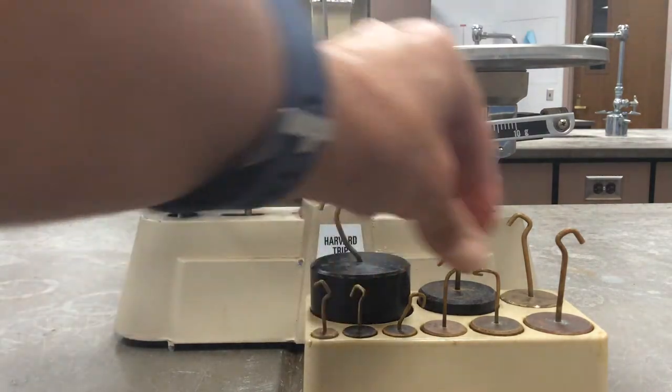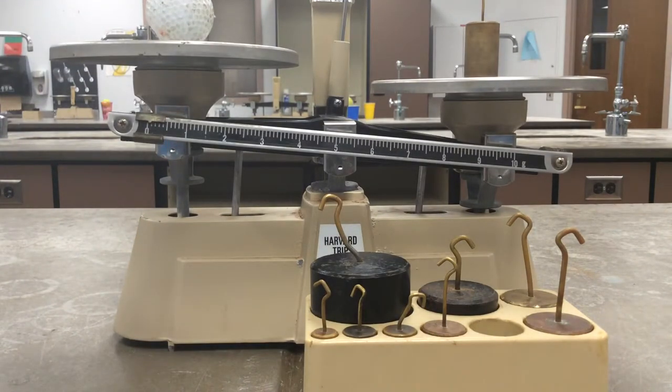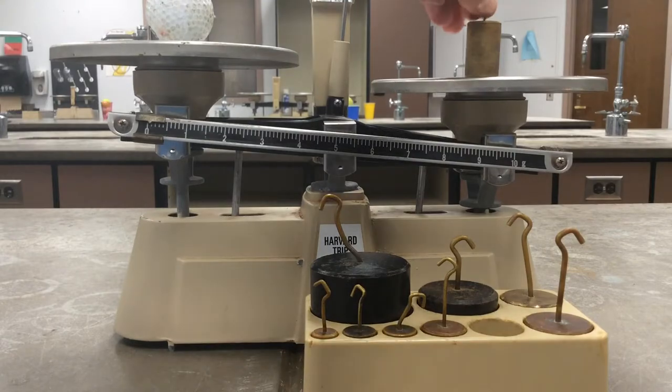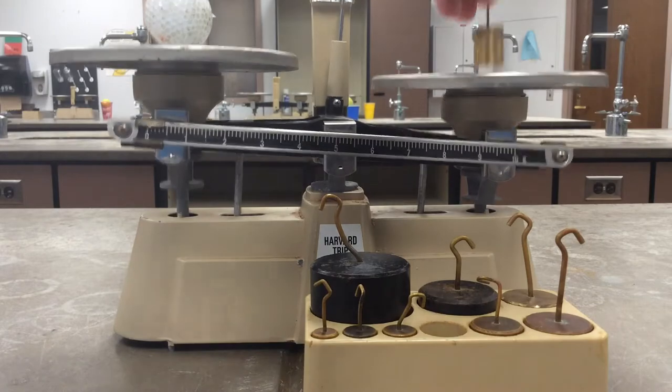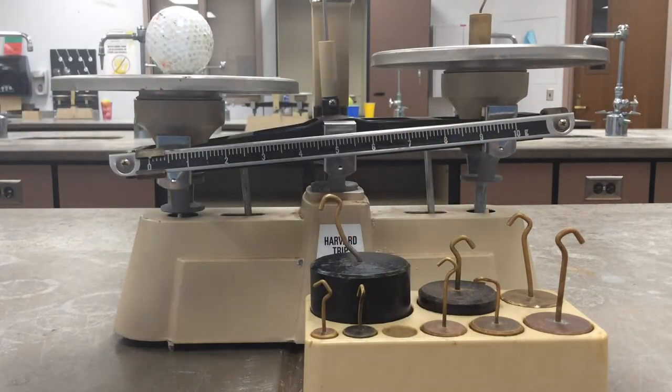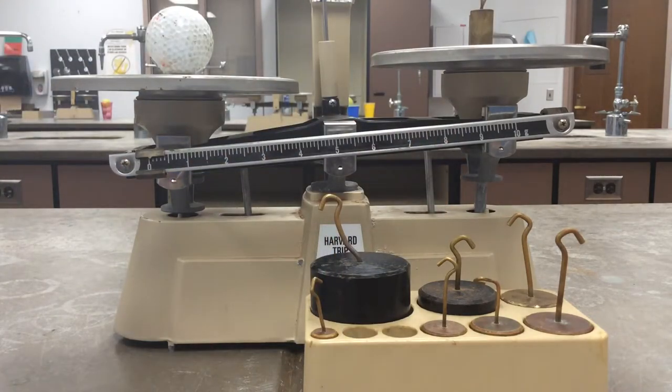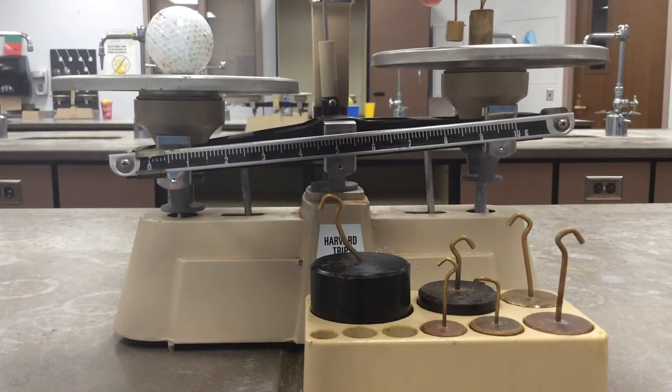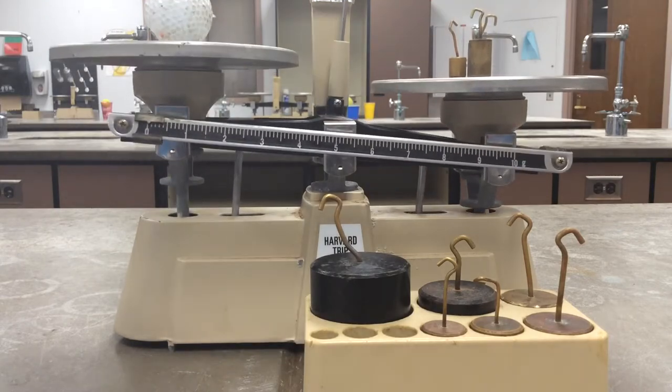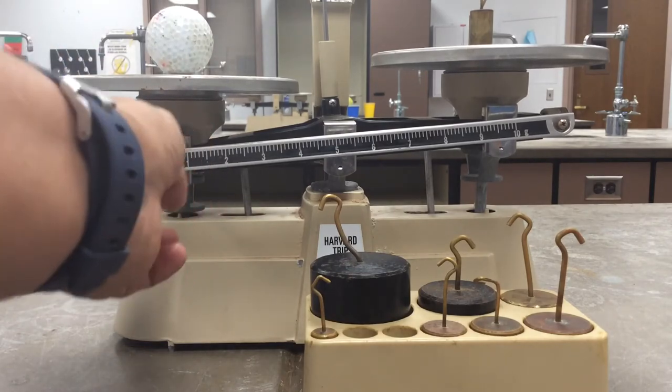So I'm going to start with 100 grams, and so that tells me that the 100 grams is way too much. Then go to the 50, again way too much. 20, not enough. I'm going to add another 20, starting to move a little. So let's see if the 10 is too much. So if that would be 20 plus 20, that would be 50, so it's less than 50 grams. So now I'm going to use the rider.